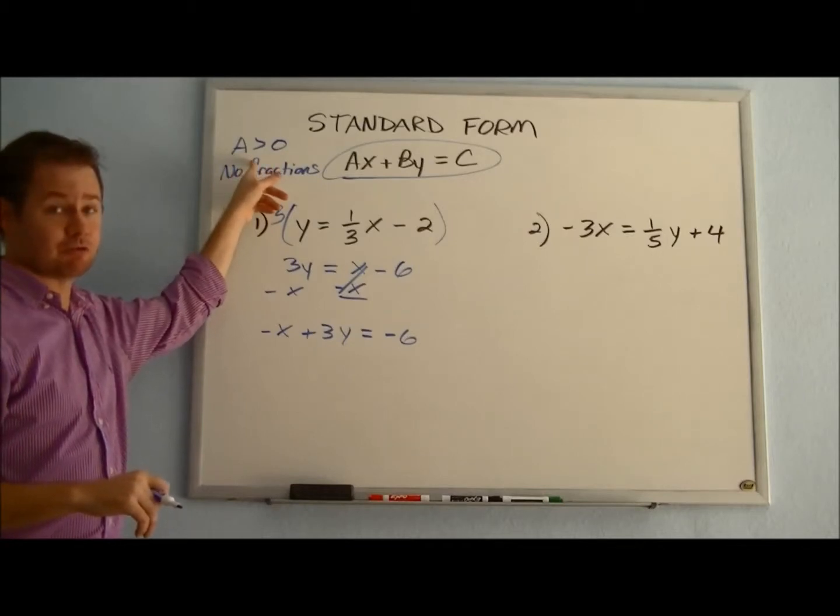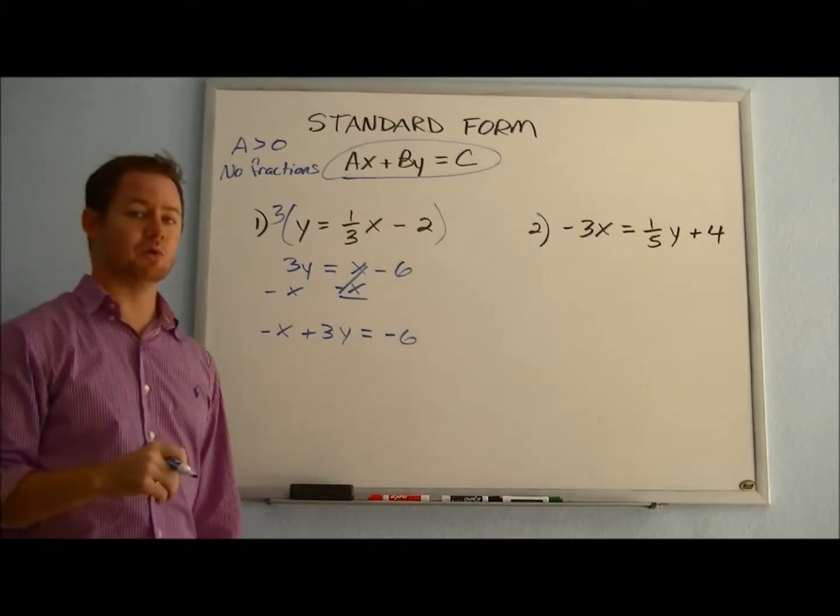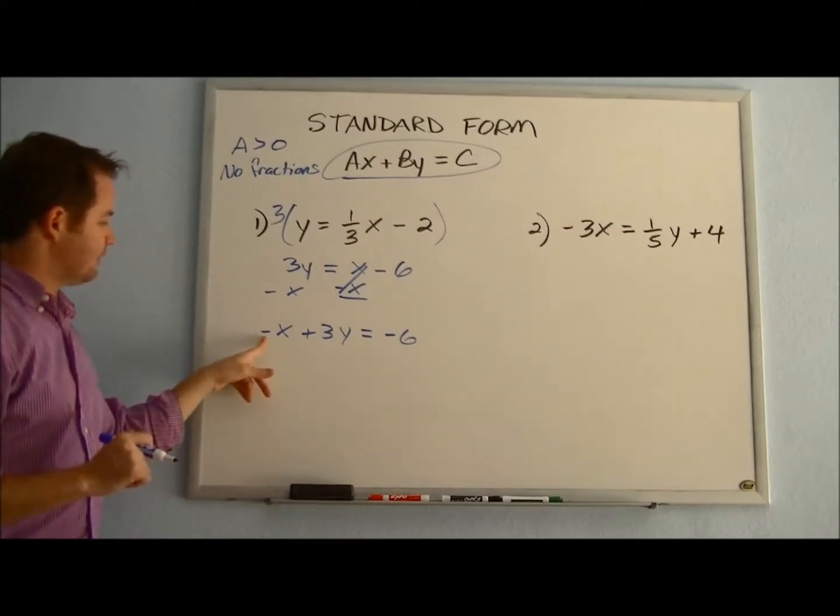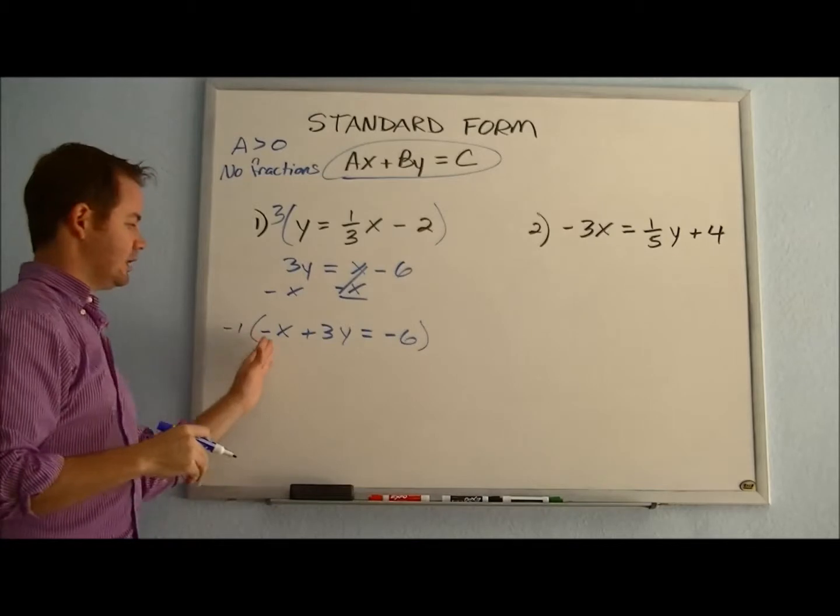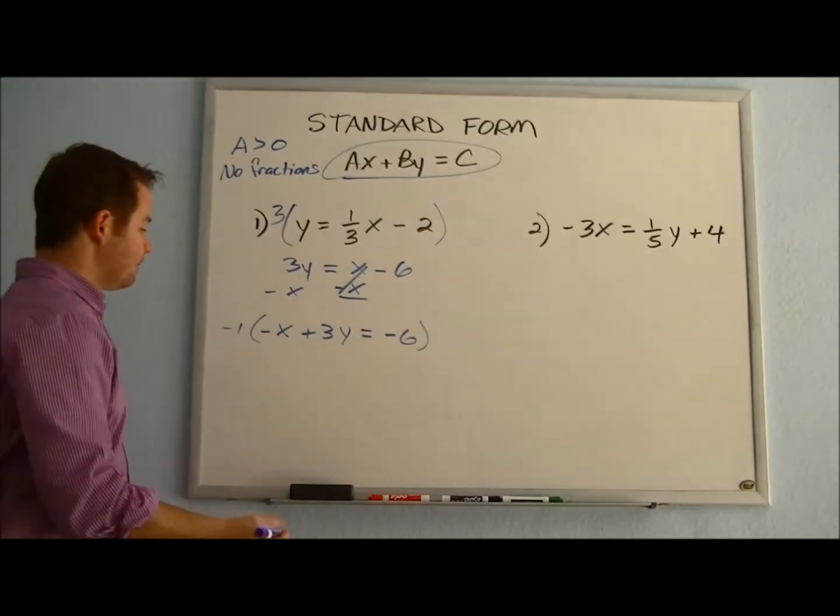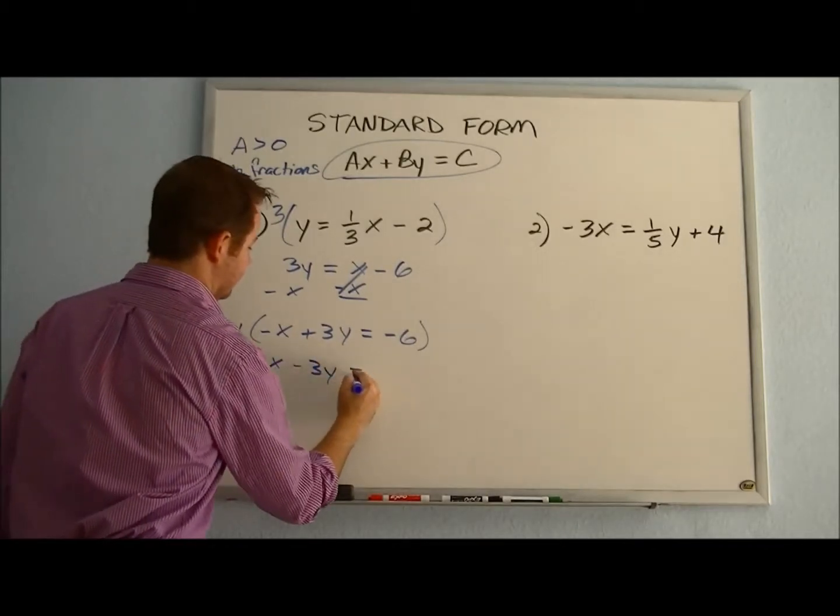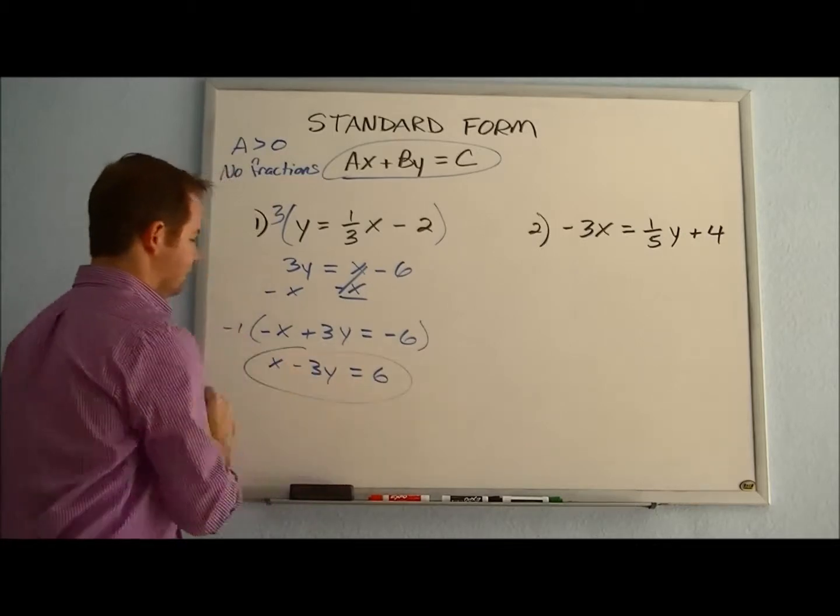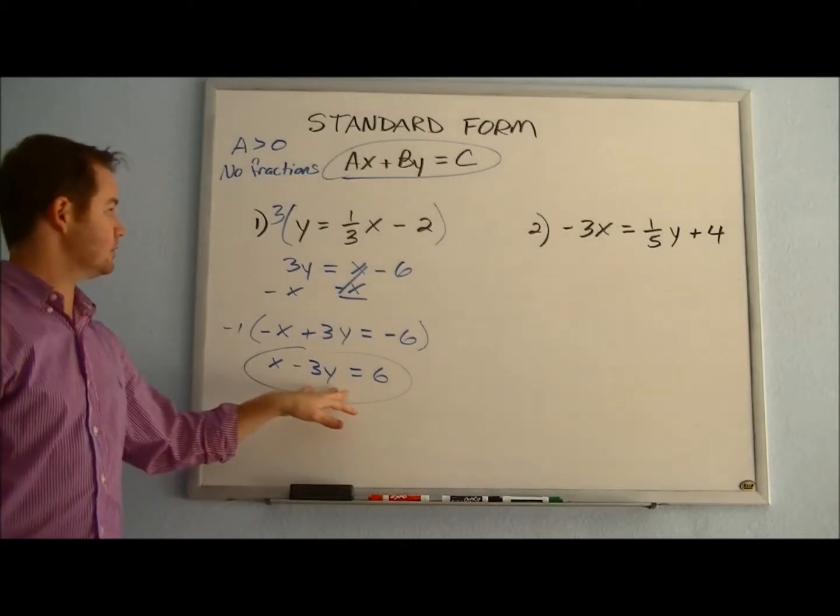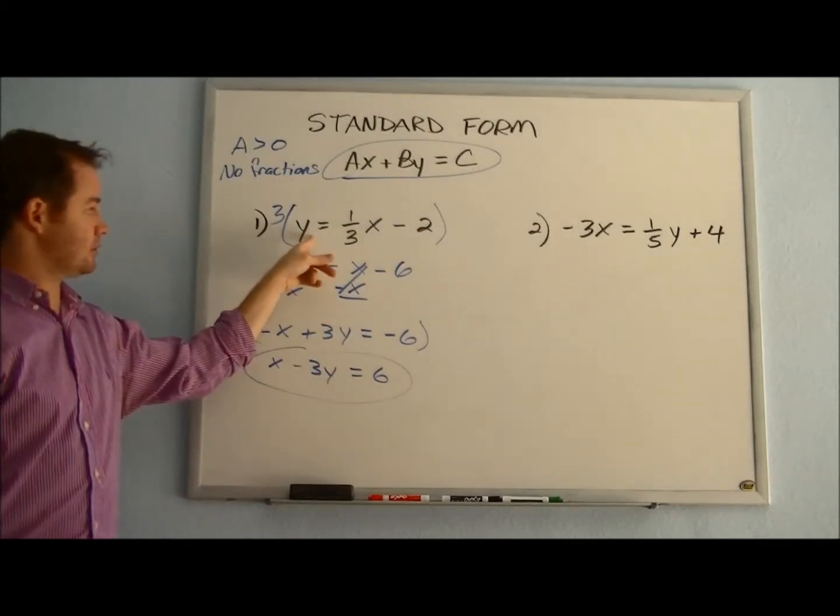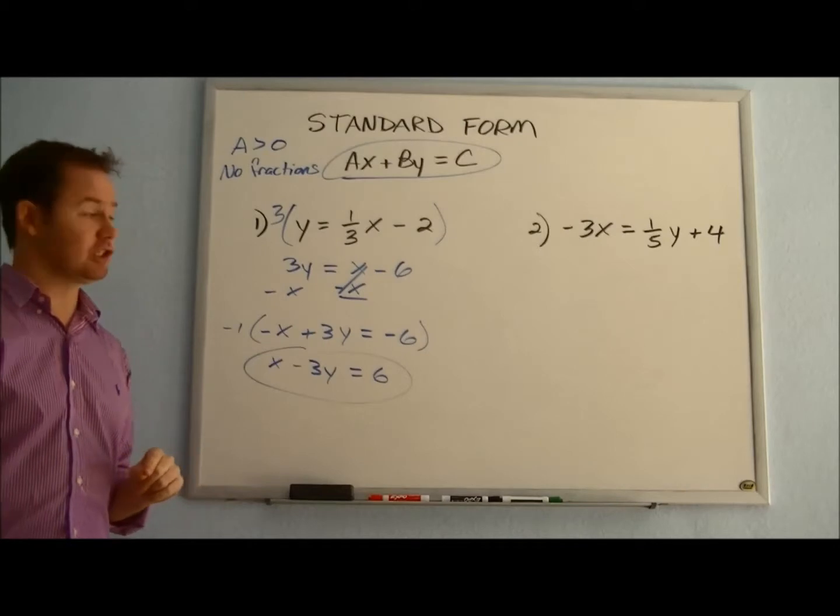But some of your teachers are going to require you to make that coefficient on the x a positive value. And ideally that's what we should aim for whenever we convert something into standard form. So if this is a negative, all that we have to do is multiply our entire equation by -1 to cancel out the negative and change the sign of everything. So here as we distribute that, we get a positive x, a -3y, and a positive 6. So for proper standard form, x - 3y = 6 is what we would end up with as our solution when converting this equation in slope intercept form into its corresponding standard form. Let's take a look at one more example just to make sure we've got it.